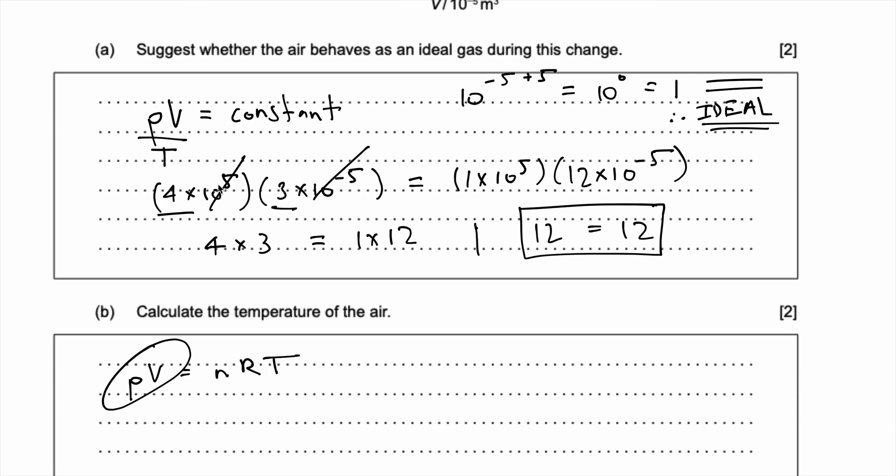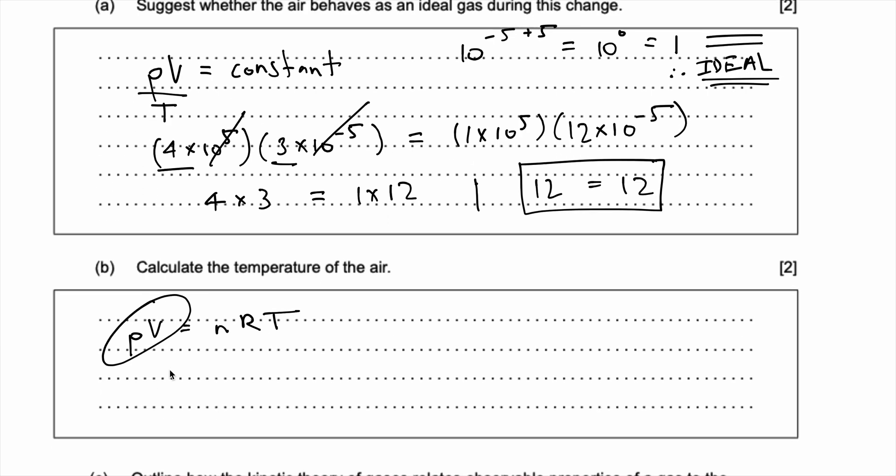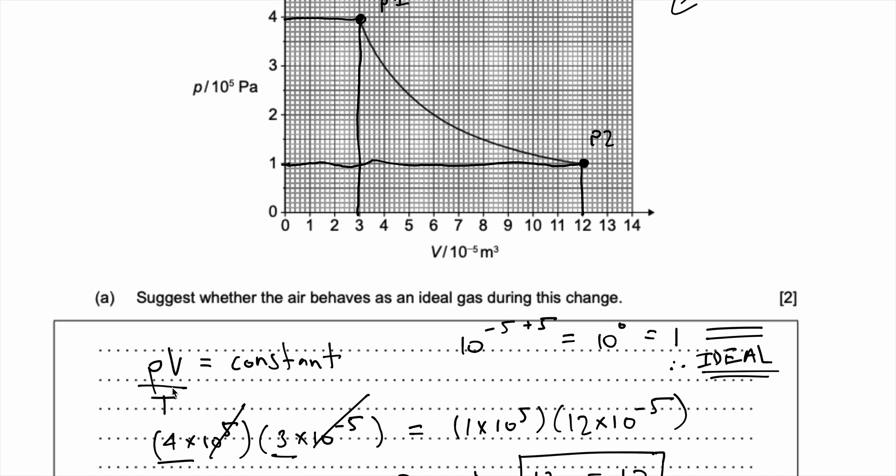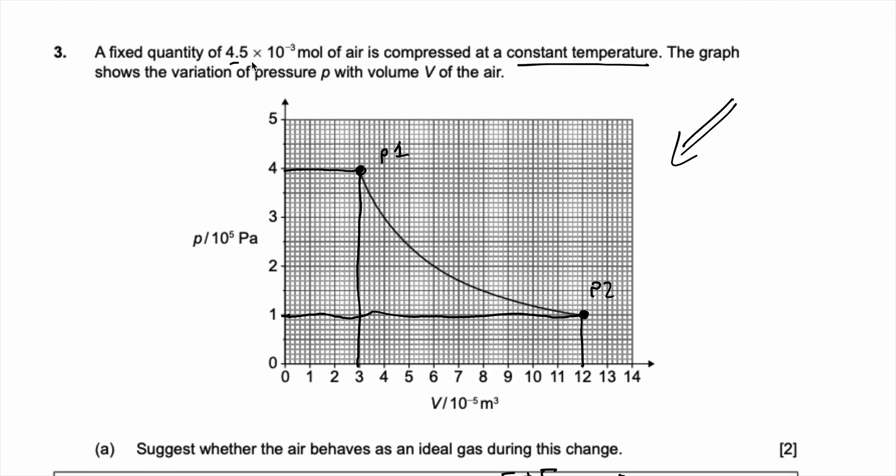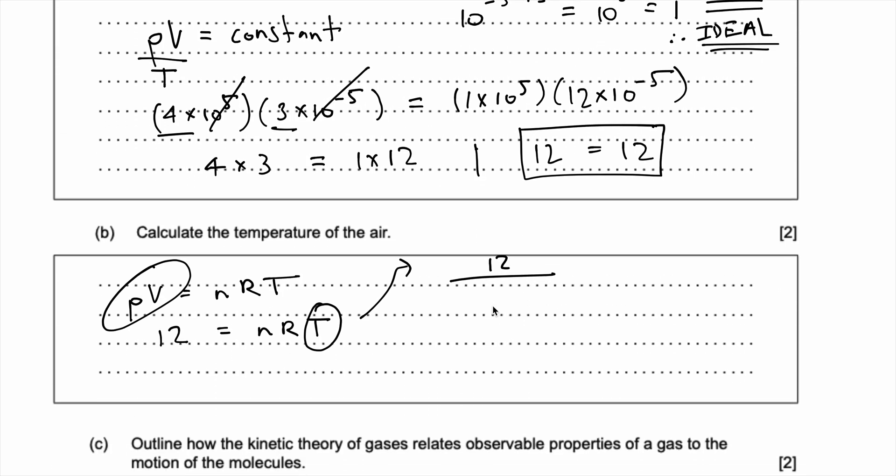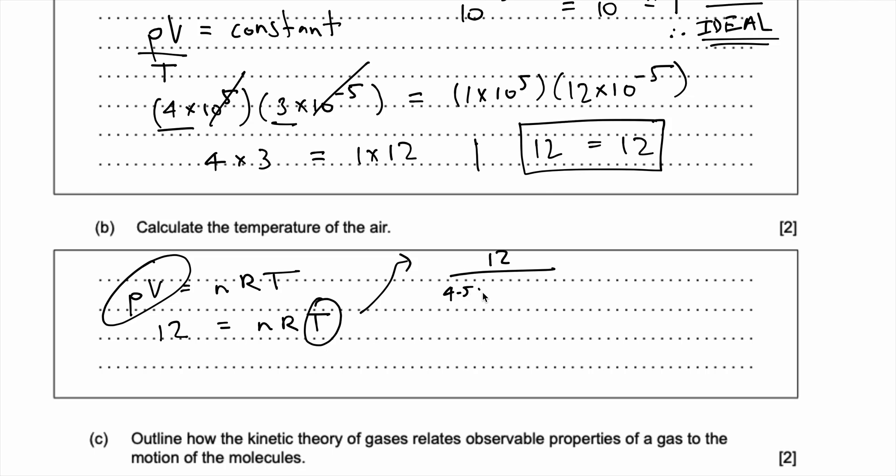So, 12, and all the units are fine, yeah, all the units are fine. Okay, 12 is equal to nRT, now we need to know, solve for T, so we do 12, divided by the number of moles, which is given here to be 4.5 into 10 to the power of negative 3. Okay, and this times by the gas constant R, which is given in your formula booklet to be 8.31.